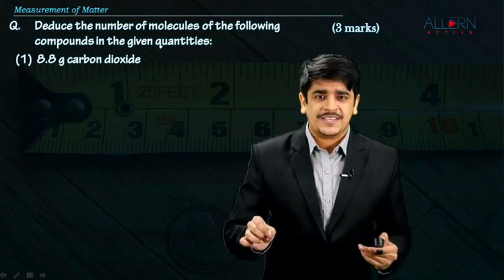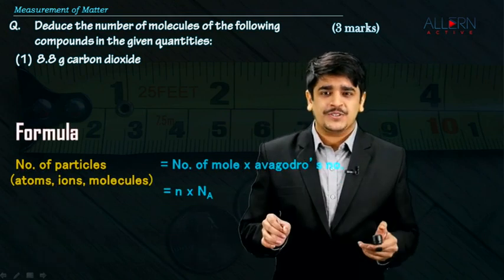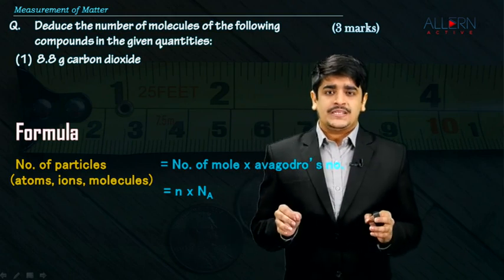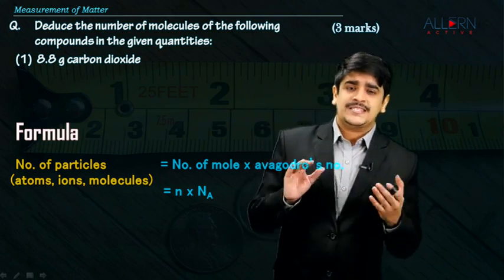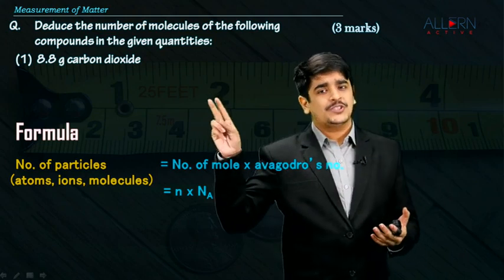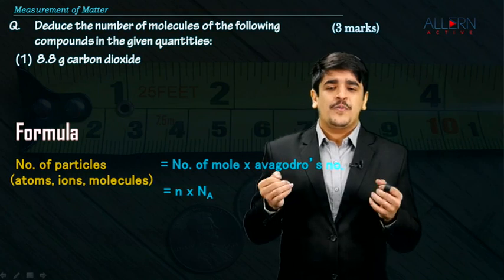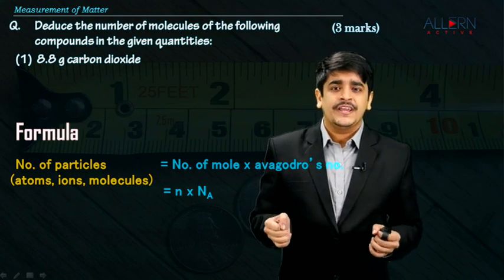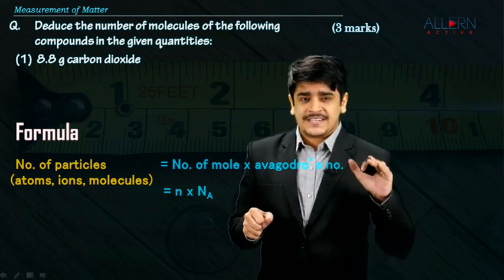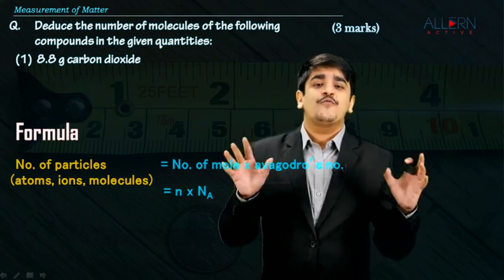To solve this particular sum, the first formula — the correct formula — appears on the screen. If you need the number of particles in any substance, and the particles could be atoms, ions, or molecules, we have the formula: it is equal to the number of moles present in that amount of substance multiplied by Avogadro's number.